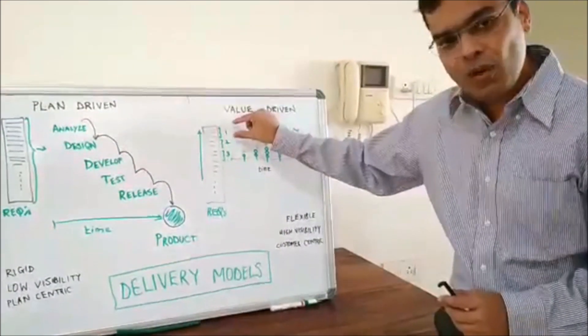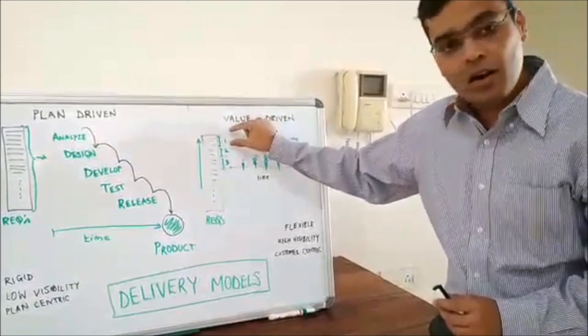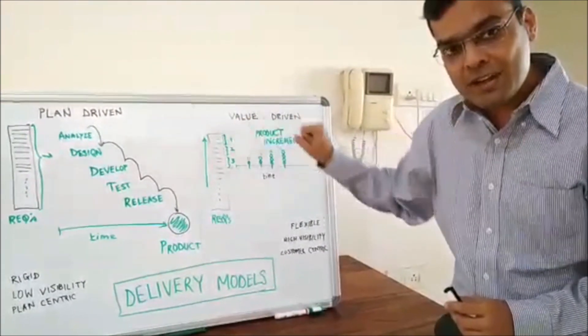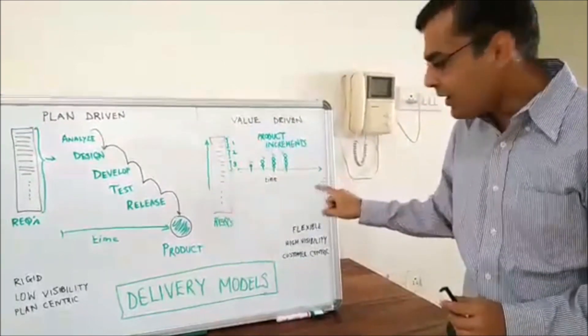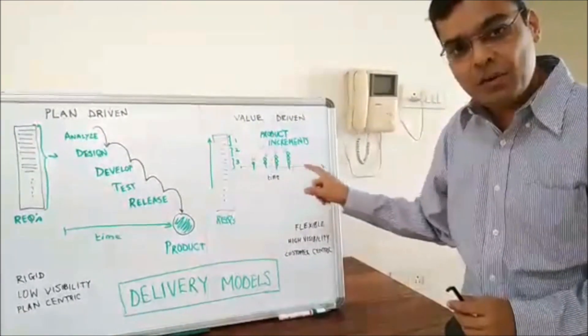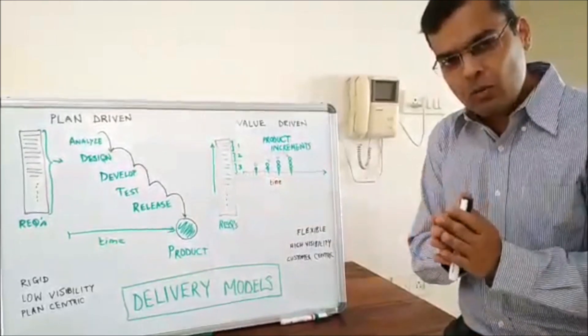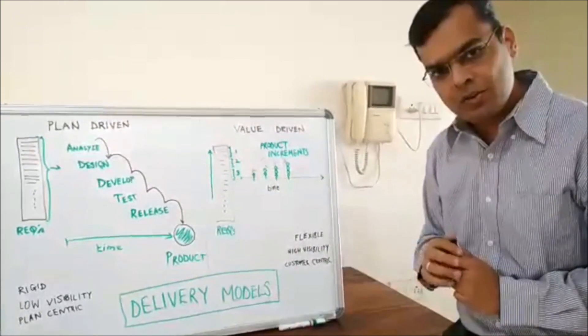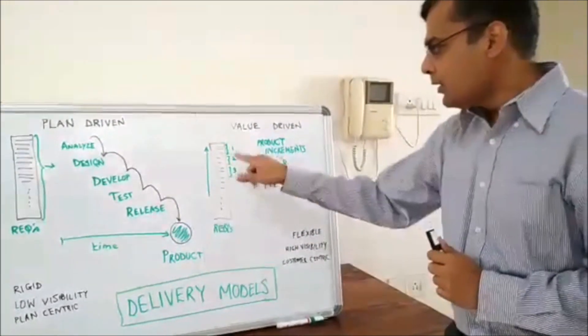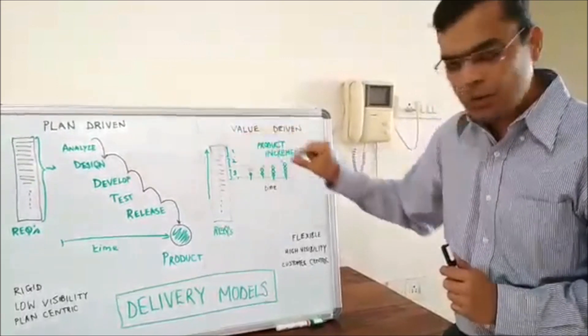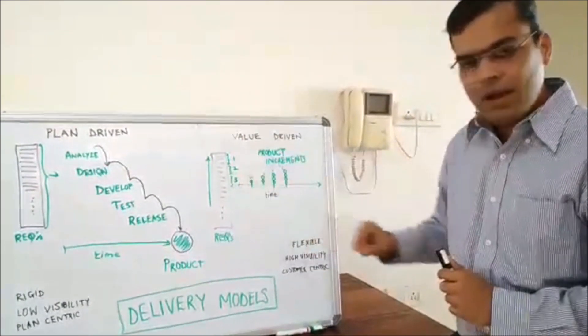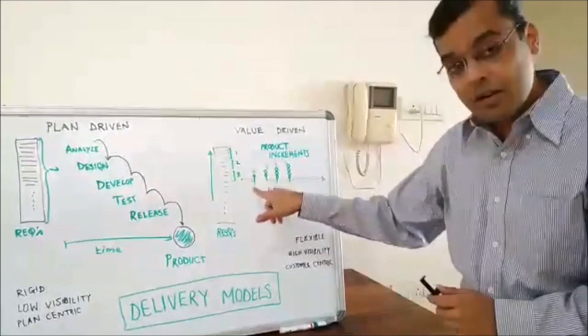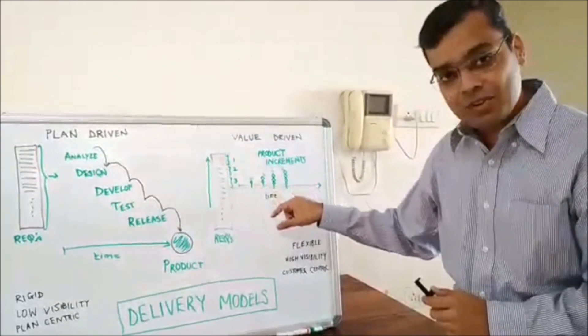So based on that, once the highest value or high value items are refined enough, the software delivery team will take it and during the entire time they break it down into iterations. So the iteration duration will keep it no more than one month. So it should be one month iterations. That's how the software delivery team will work on. So during the first iteration they'll take the first set of requirements, do the entire analysis, design, develop and build and they release it by the end of the first sprint.